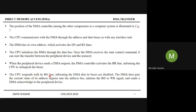The CPU responds with its BG (bus grant) line, informing the DMA that its buses are disabled. The DMA then puts the current value of its address register onto the address bus, initiates the read or write signal, and sends a DMA acknowledge to the peripheral device.